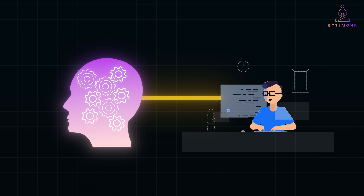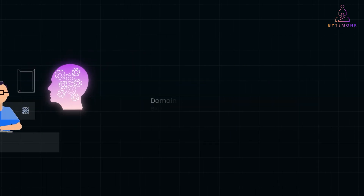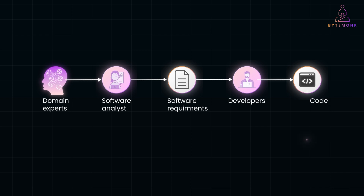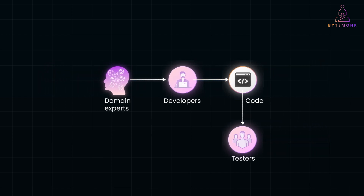Almost all software projects involve collaboration among various stakeholders: domain experts, product owners, engineers, designers, testers, and more. The success of these projects hinges on clear communication and alignment among all parties. Do stakeholders agree on the problem being solved and the solution being built? Misalignment or conflicting assumptions can derail the entire progress. Research shows that poor communication is a common reason for software project failures. Often, domain knowledge is filtered through intermediaries like business analysts or project managers, instead of direct interaction between domain experts and engineers. This translation process can dilute critical domain knowledge, which is essential for solving business problems.